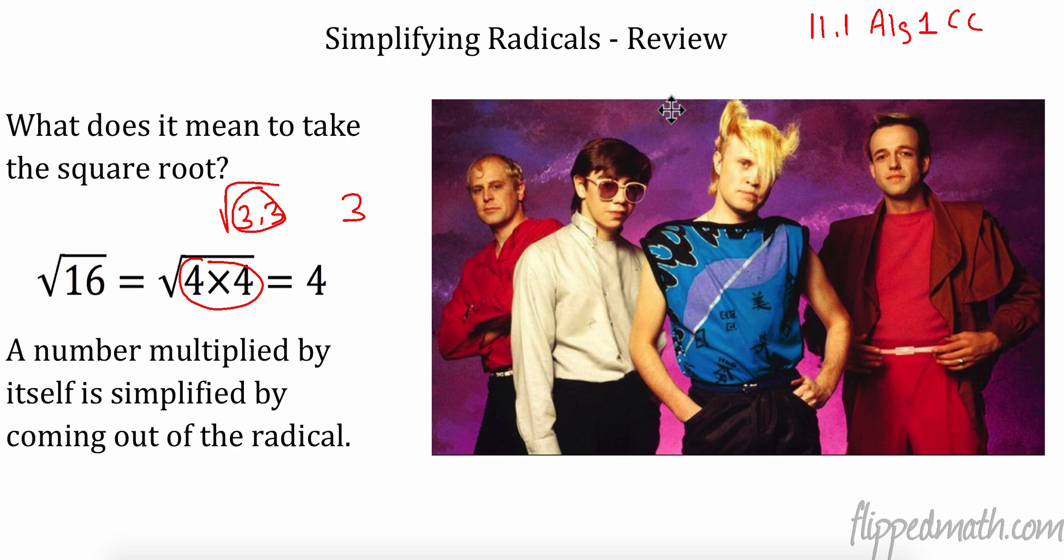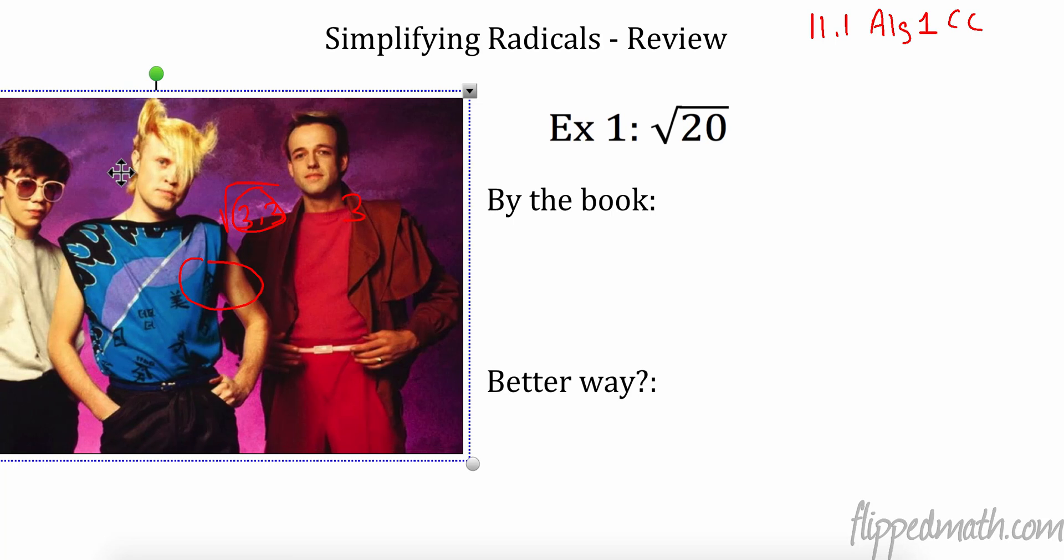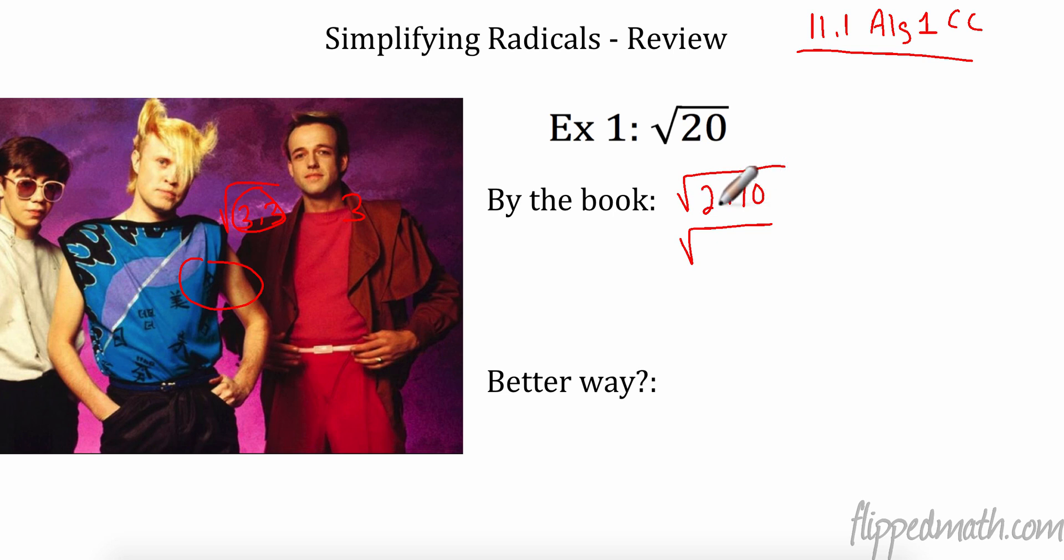Let's take a look at example 1 here. Let's move our Flock of Seagulls out of the way. Now there's two ways. I'm going to do it by the book first, and that's the way they talk about in this Algebra 1 Common Core Review, 11.1. So I'm going to factor 20. 20 is 2 times 10. I don't have any repeated numbers yet. 10 is 2 times 5. I can't factor 2, it's prime. I can't factor 5 because it's prime. Notice this: I have a pair of repeated numbers. When I have a pair of repeated numbers, where does it go? Outside. The non-repeated number stays inside. And that's awesome. It's a really good way to do it.